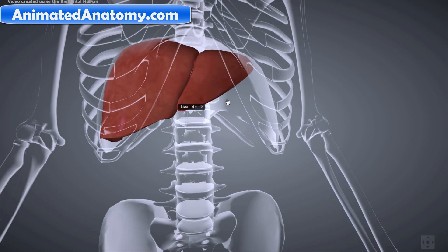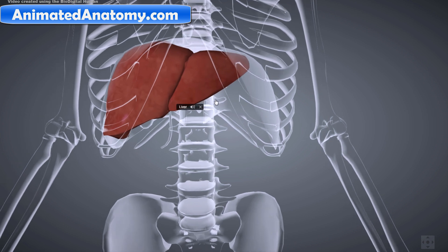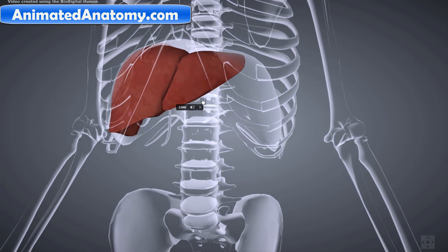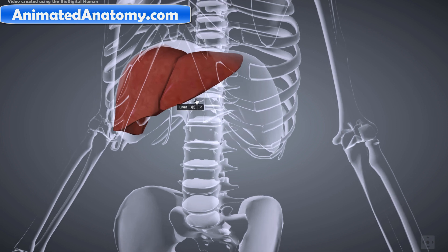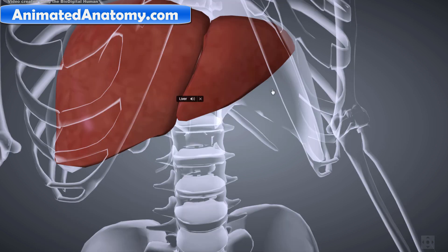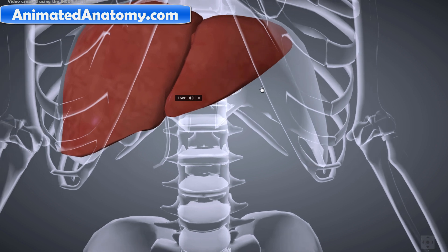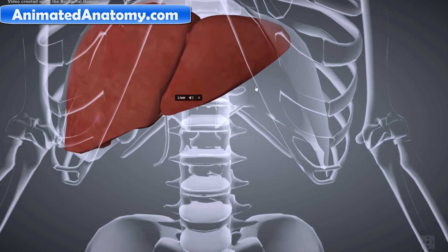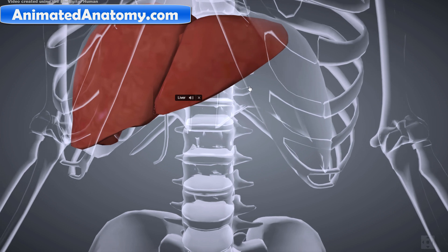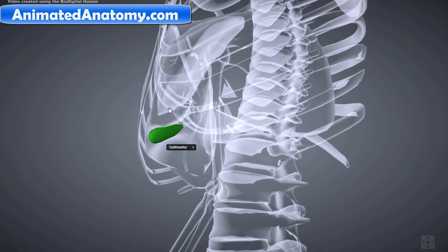Its functions include regulation of glycogen storage, decomposition of red blood cells, plasma protein synthesis, hormone production, and detoxification. The liver is an accessory digestive gland and it produces bile, an alkaline compound which aids in digestion via the emulsification of lipids.